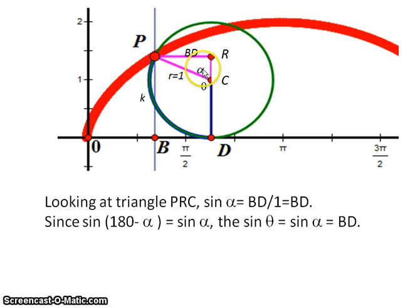If we look at the sine of alpha, it's equal to the opposite, which is BD, over the length of the hypotenuse, which in this case is 1. So the sine of alpha equals BD.